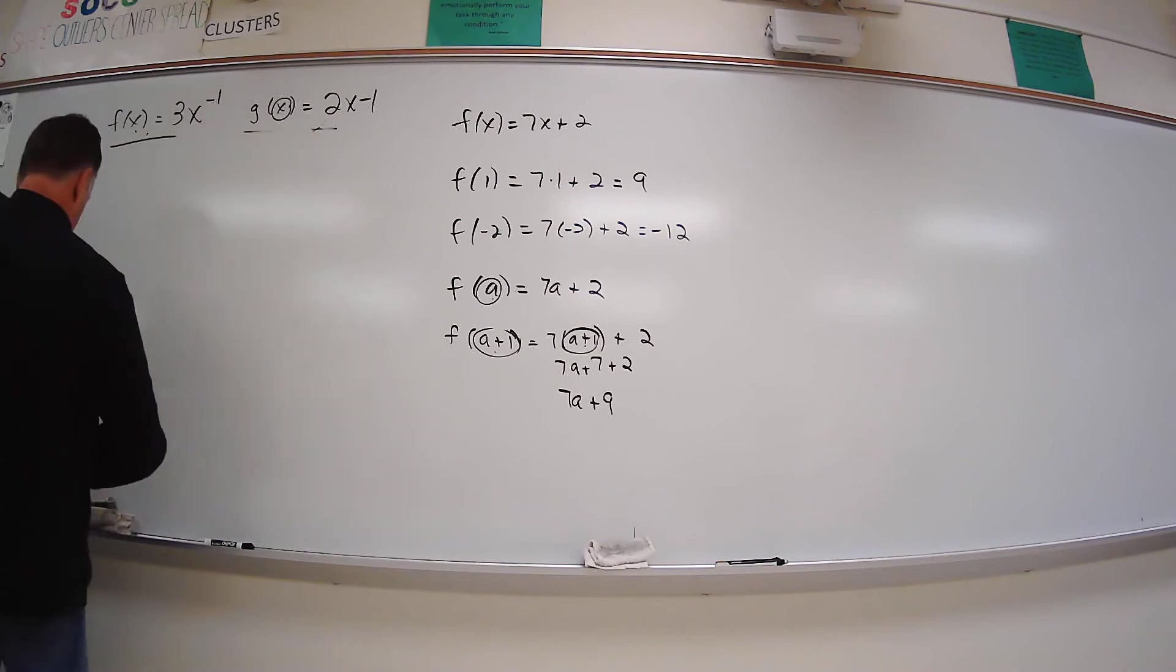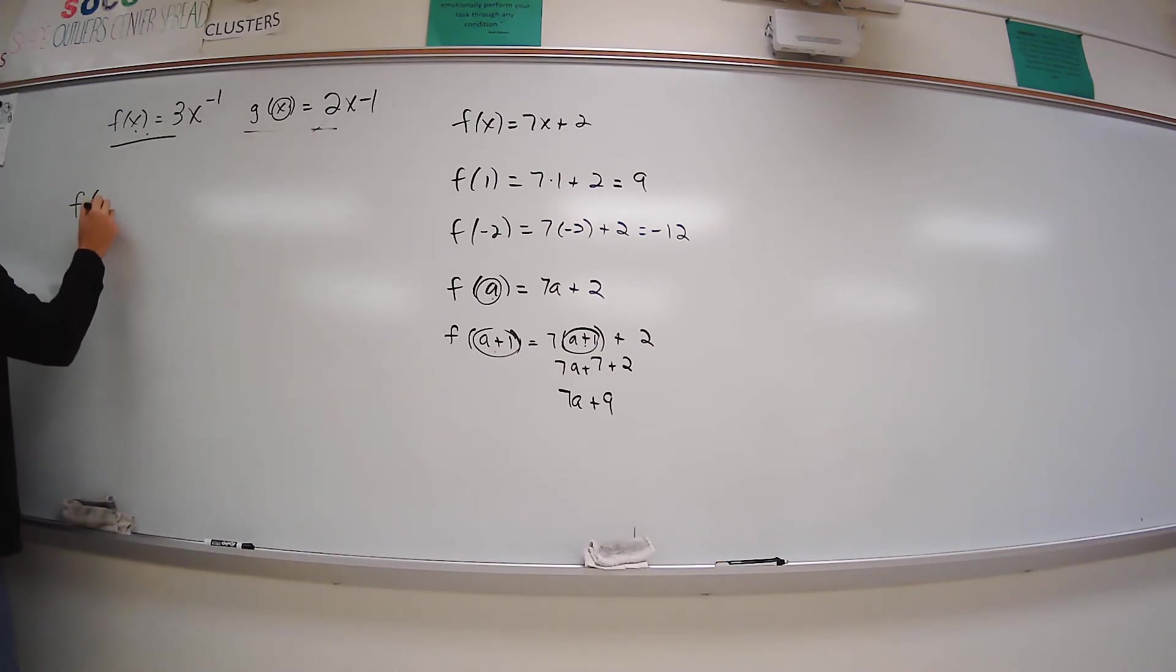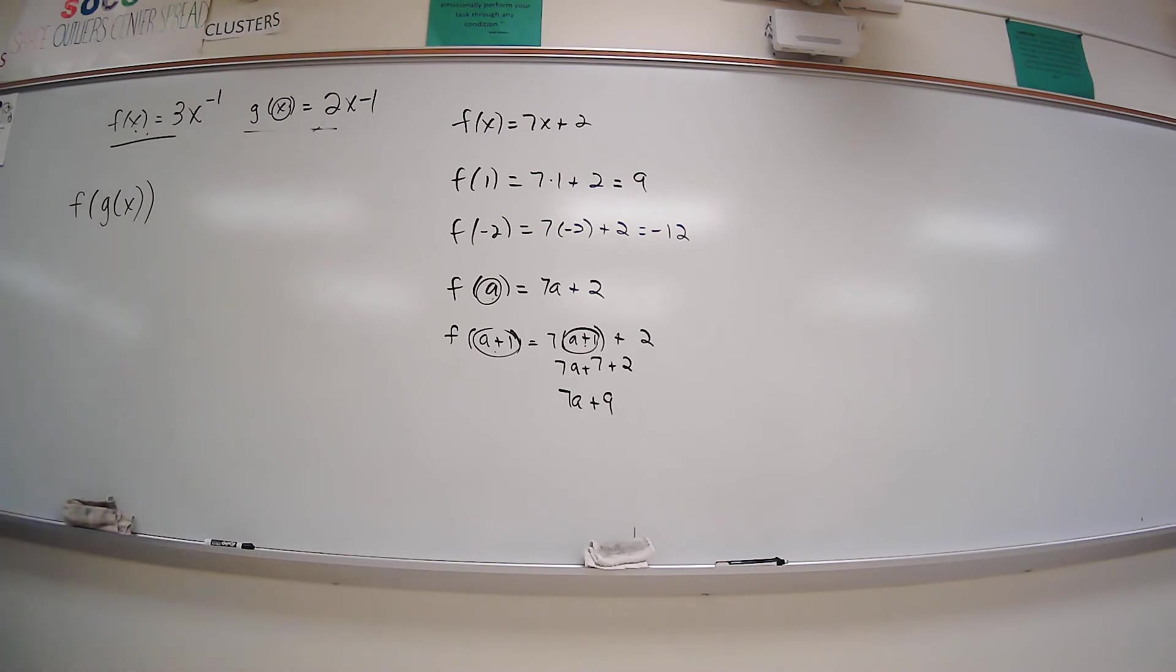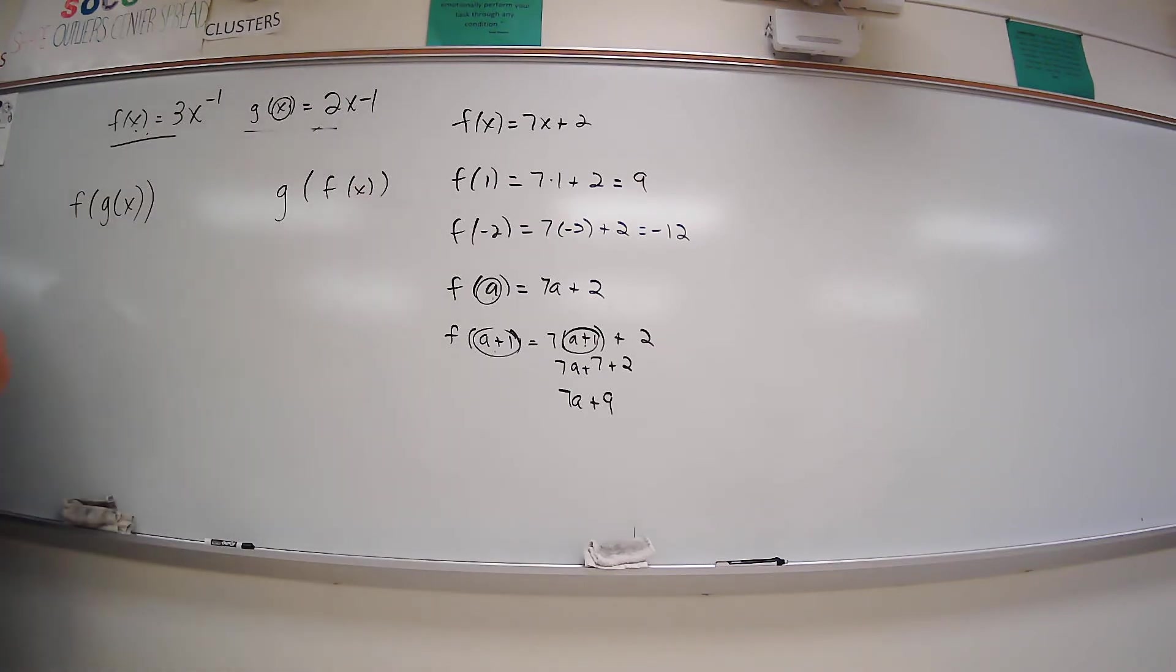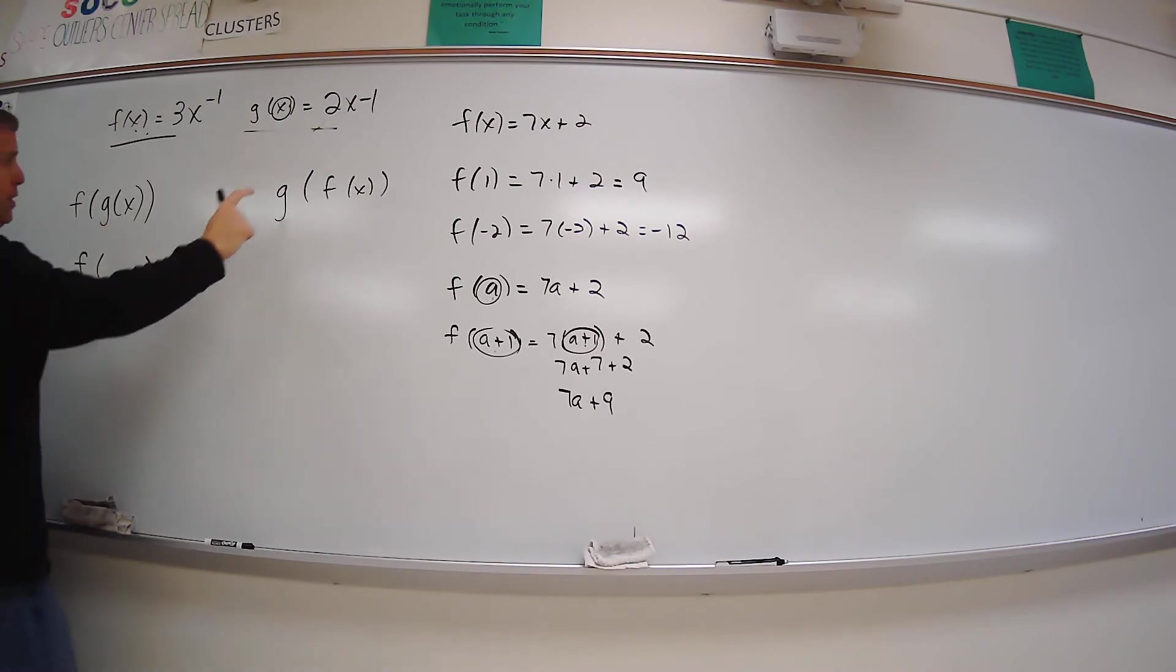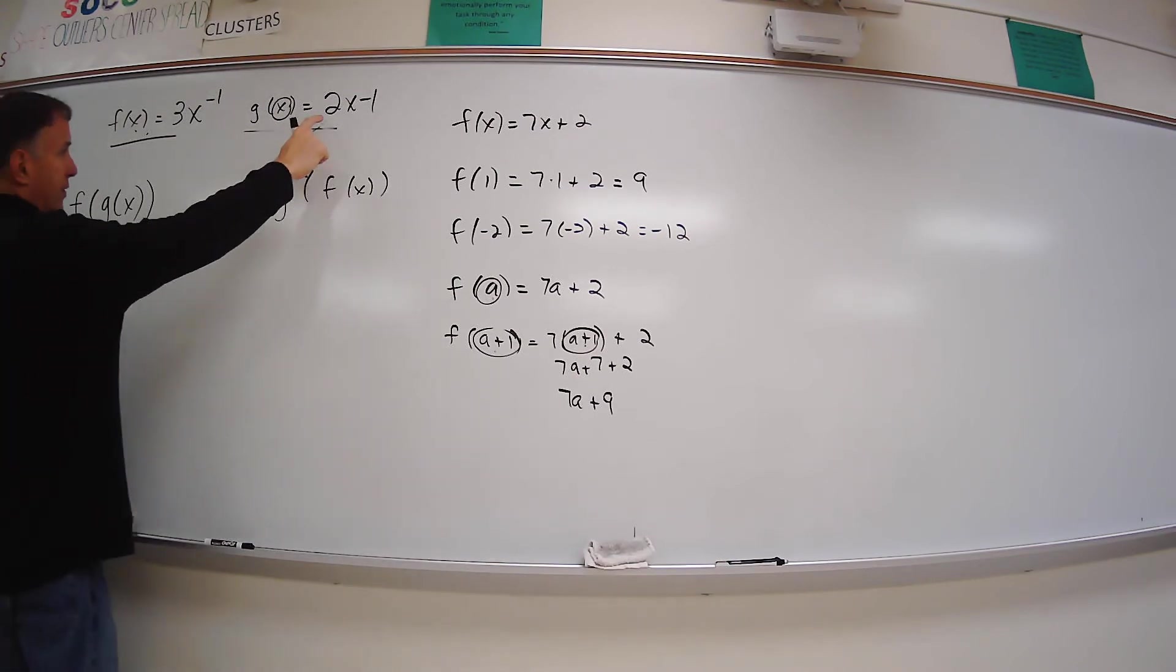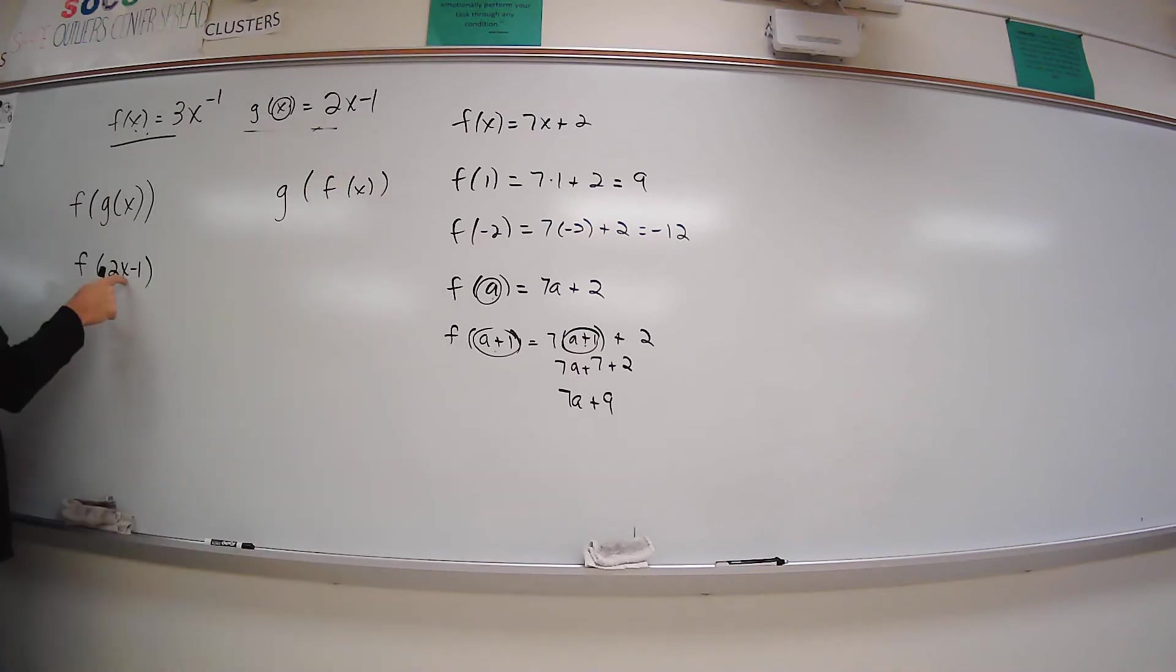So they want to find f of g of x, g of f of x, and then we'll do one more after that. So for this one, I want to find f of whatever g of x is. g of x is 2x minus 1. So I replace the g of x with 2x minus 1.